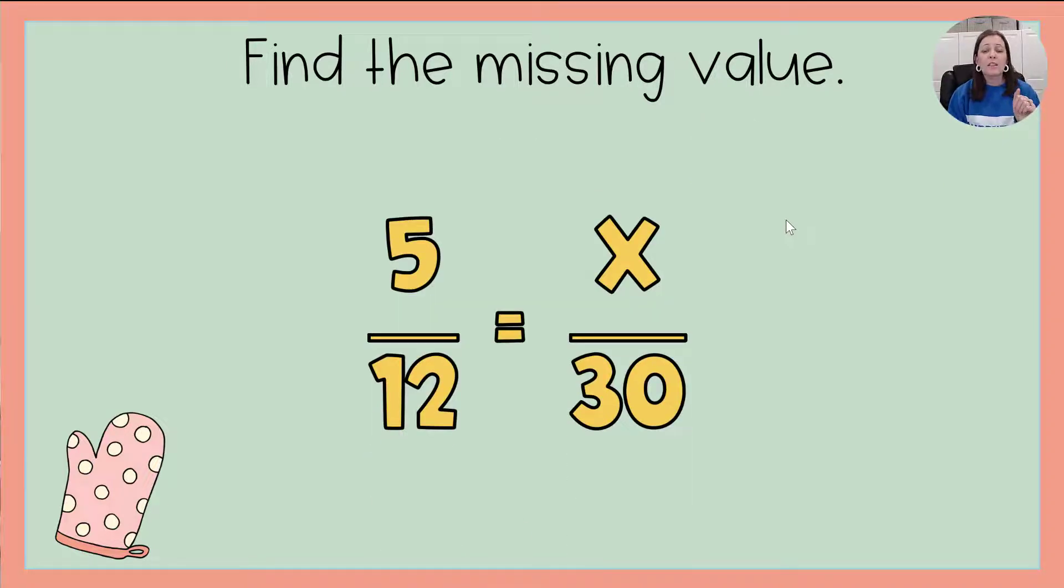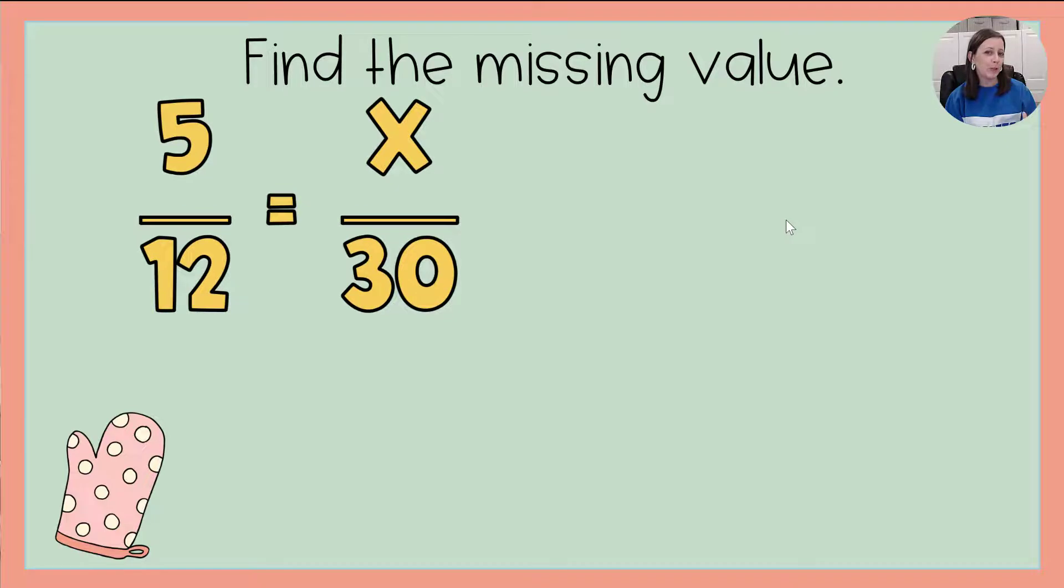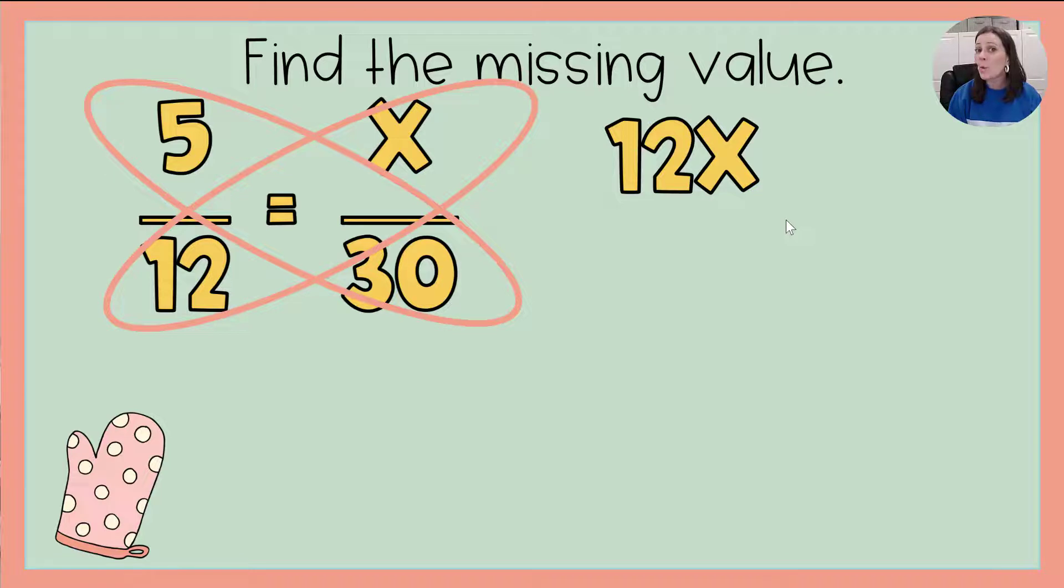You can also do that with division, but sometimes it doesn't work. For example, in this one, 12 times what is 30? Well, it's not a whole number. So I'm going to use a different strategy. So we're going to take that method away. I'm going to slide this problem over so we've got plenty of room to work, and I'm going to use my cross multiplication method. I'm going to do 5 times 30, and I'm going to do 12 times x. Well, how do I multiply 12 in a variable, an unknown? I just simply write 12x, and know that that means 12 times x. That's going to be set equal to, since I know they are proportions, the answer to 5 times 30, which is 150.